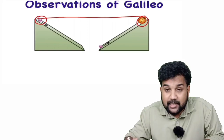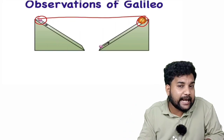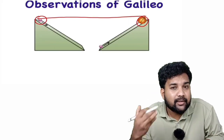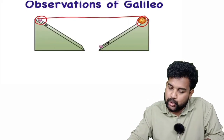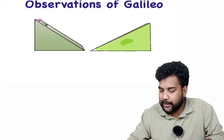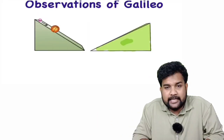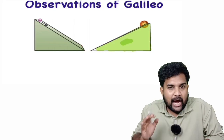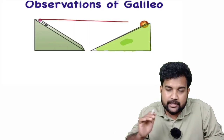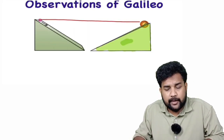Galileo then does the same experiment with another inclined plane, but with a greater inclination — a smaller angle. The same experiment is repeated. It was observed that the distance covered by the ball is not the same, but the height reached remains equal.